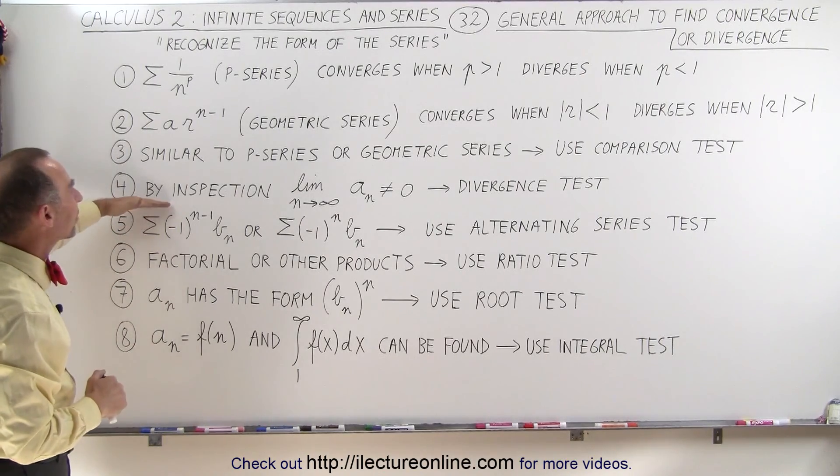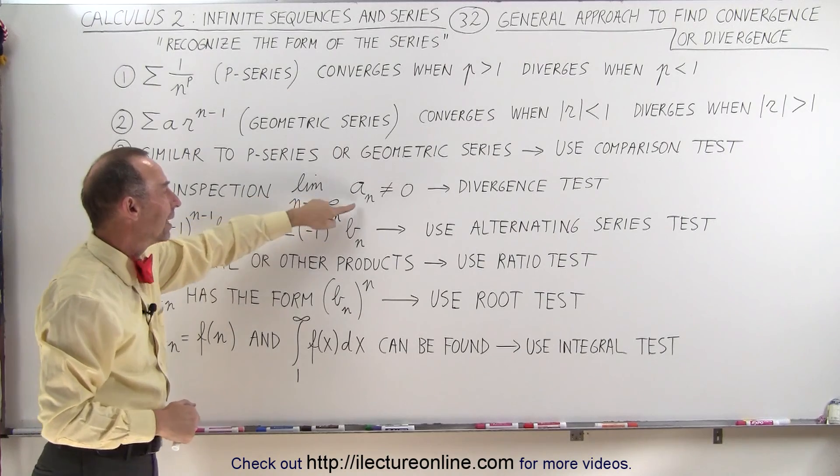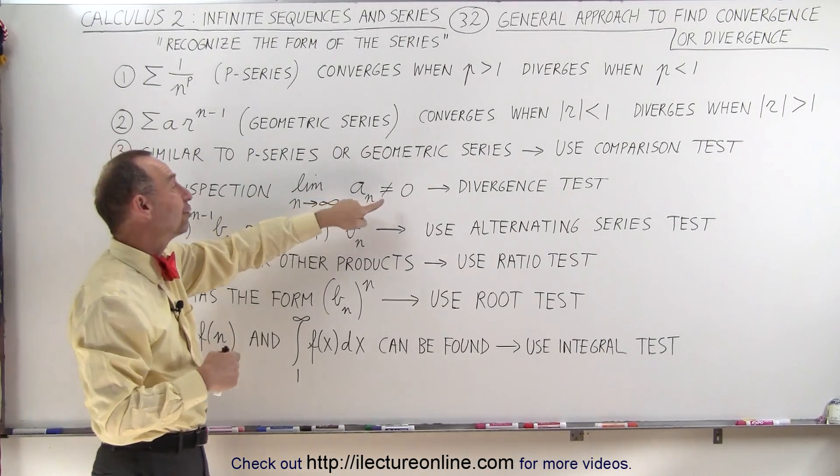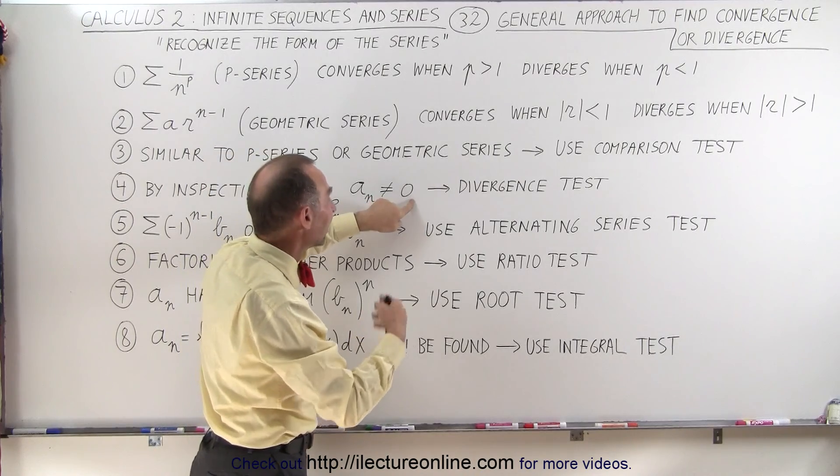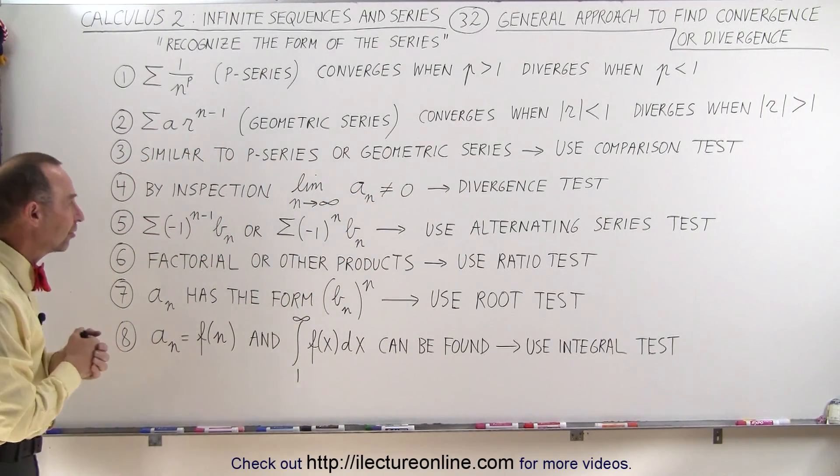We can also by inspection see that if we take the limit as n approaches infinity that the terms become smaller and smaller, but if they don't become zero in the limit then we know that they will diverge. We can do a divergent test.